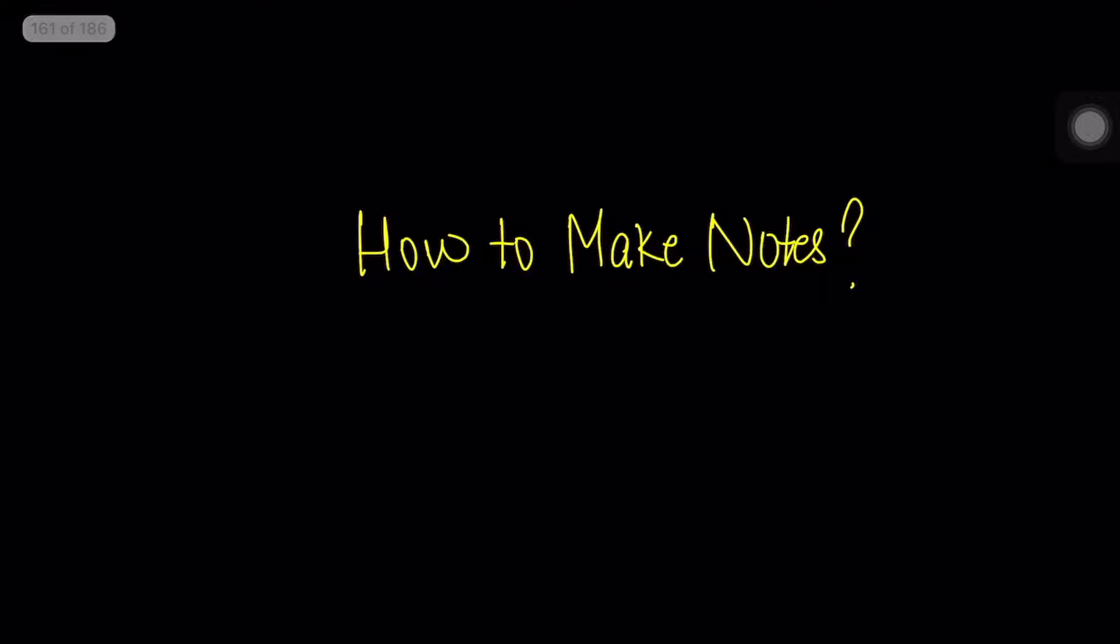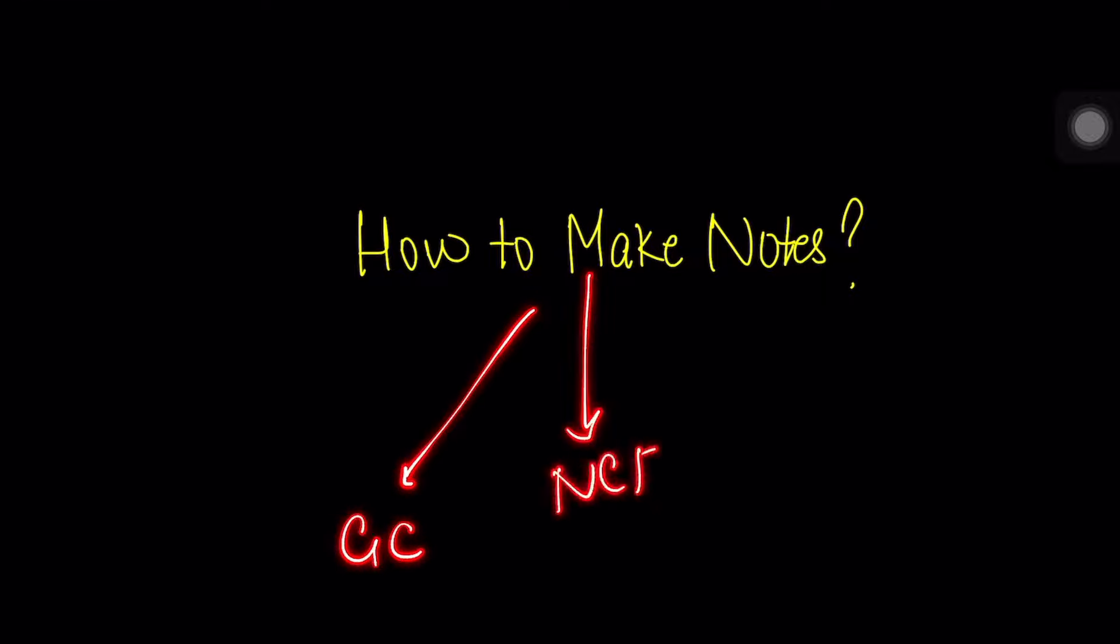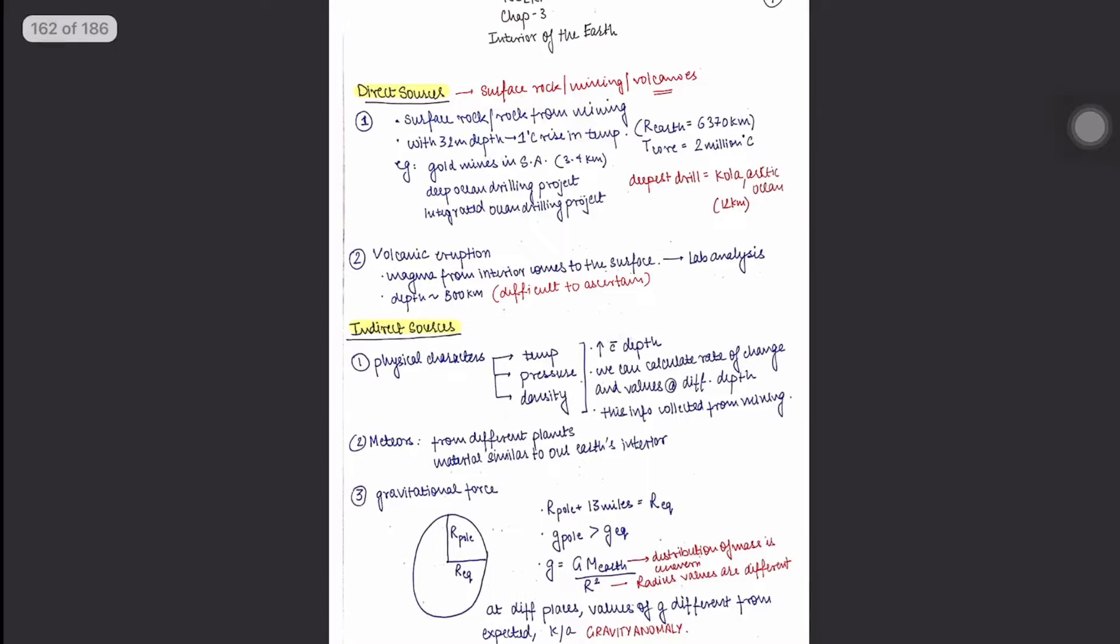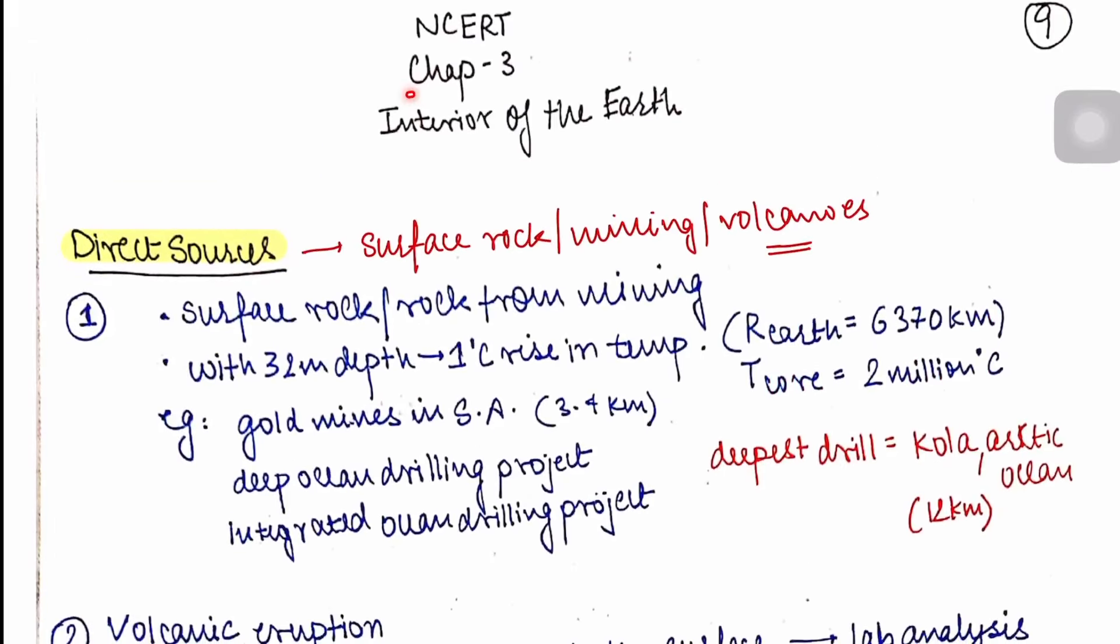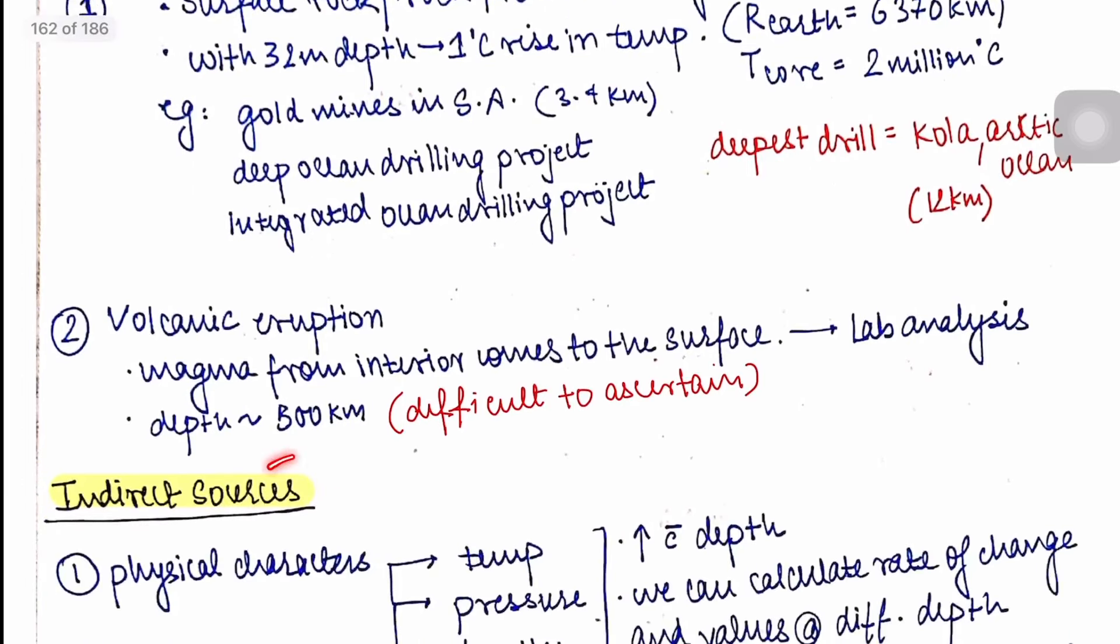Moving on, now how to make notes. Like I told you I had studied the NCERT along with GC-Liong. Now these two books combining them, how to make notes, I'll show you that live. So these are my notes. NCERT chapter 3 interior of the earth. Start with direct sources, indirect sources. This is directly from NCERT. And look, whatever I felt was important for MCQ, those things I've written in red.